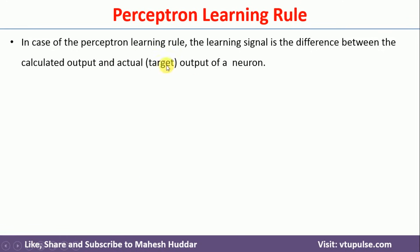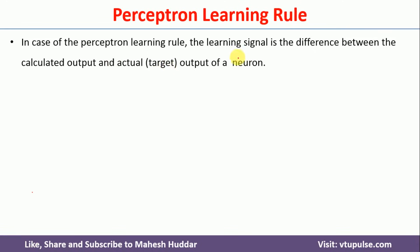In the case of the perceptron training rule, the learning signal — that is, the error — is the difference between the calculated output and the actual or target output. If there is no difference, the network has learnt it. Otherwise, if there is a difference, the network has not learnt, and we need to go back and do some weight updation.